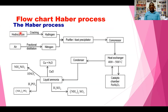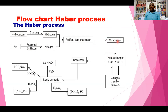The raw materials are hydrogen and nitrogen. Hydrogen is obtained from hydrocarbons such as alkanes, which undergo cracking to produce hydrogen gas. Nitrogen is obtained from air by fractional distillation. The nitrogen and hydrogen gases are then purified using dust precipitators or filters. The purified gases are taken to the compressor, where they are compressed to attain the required pressure of about 200 to 500 atmospheres.